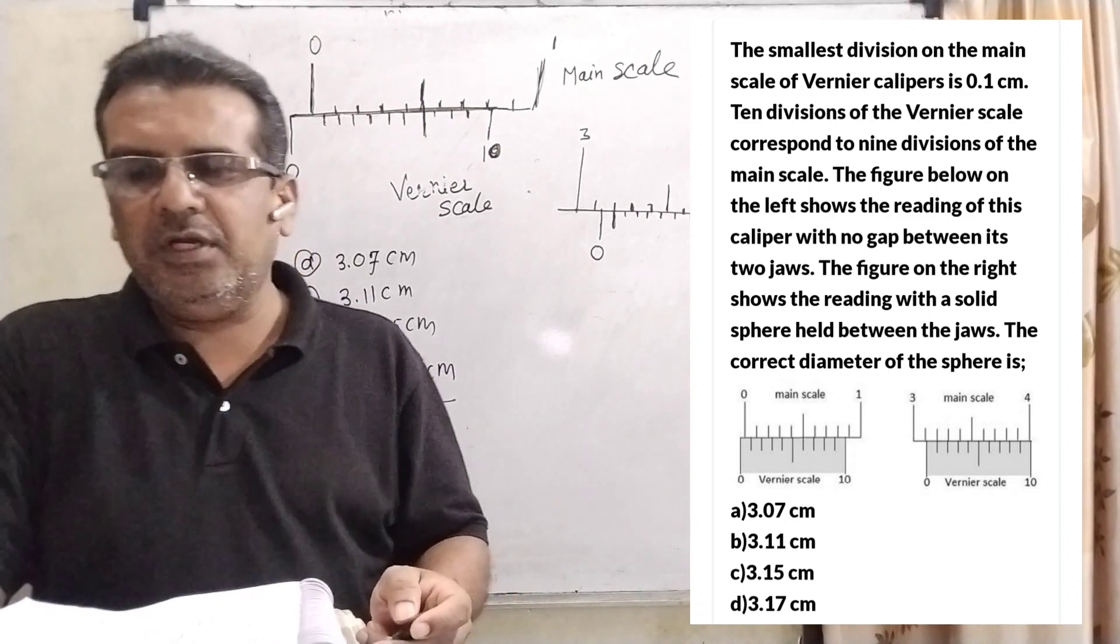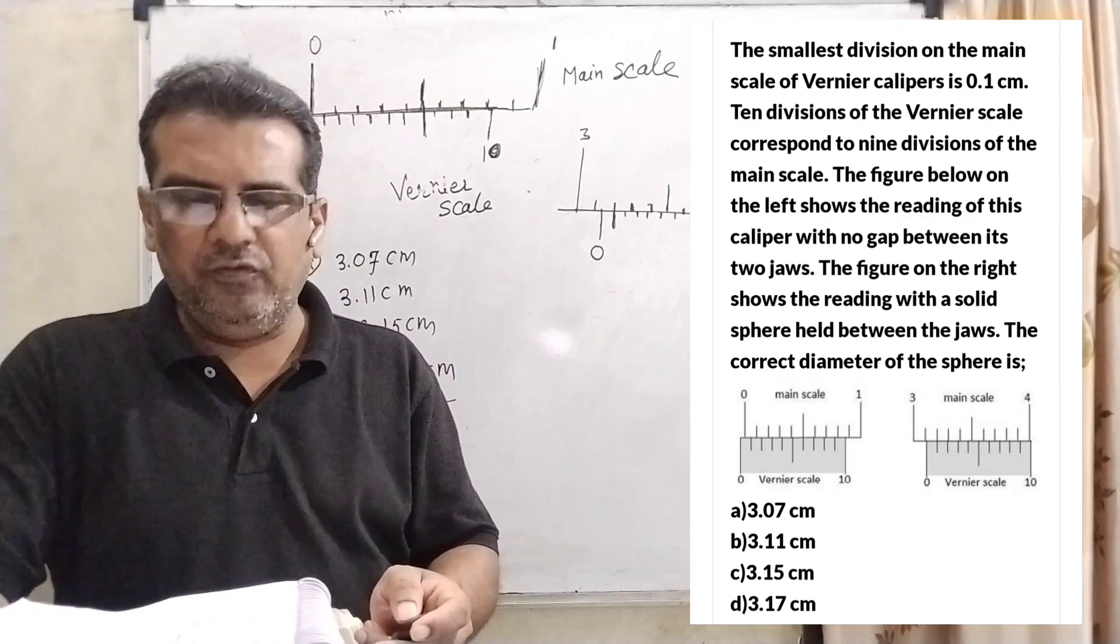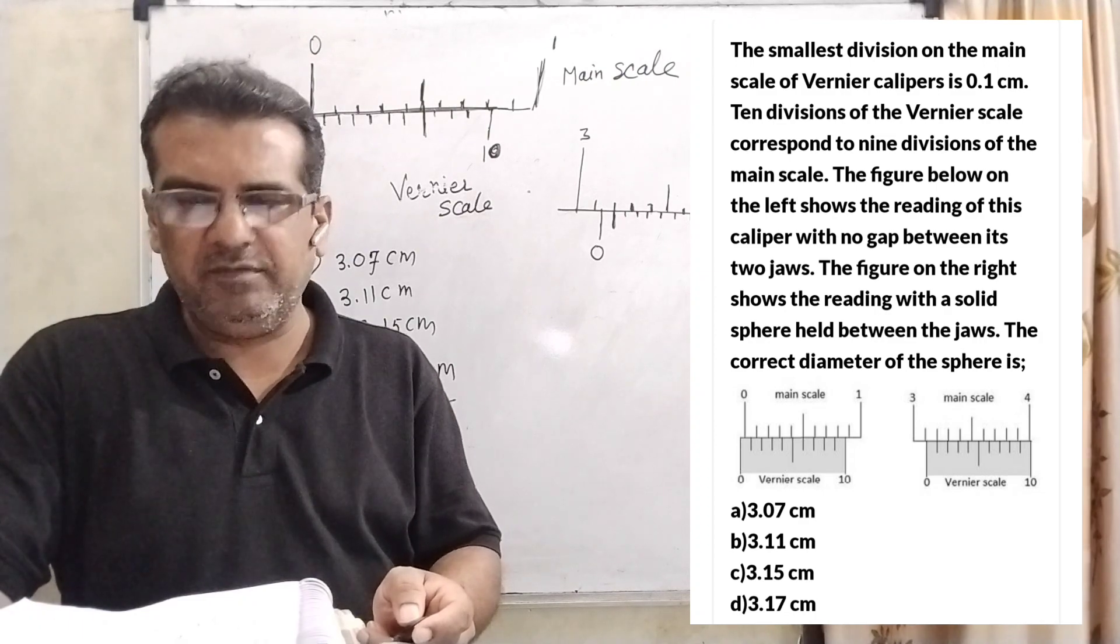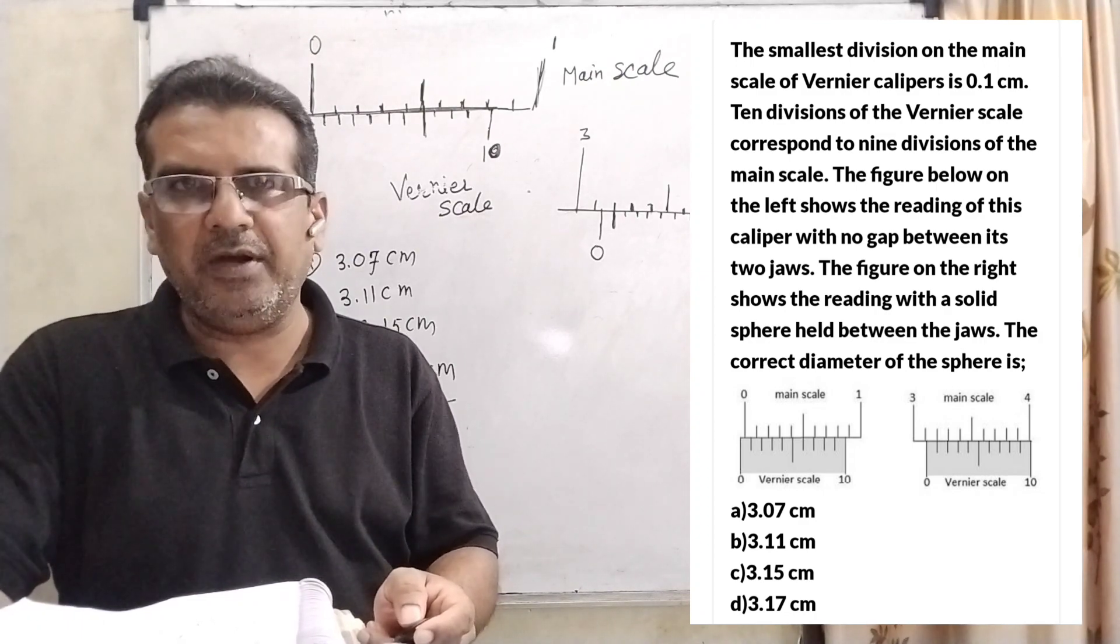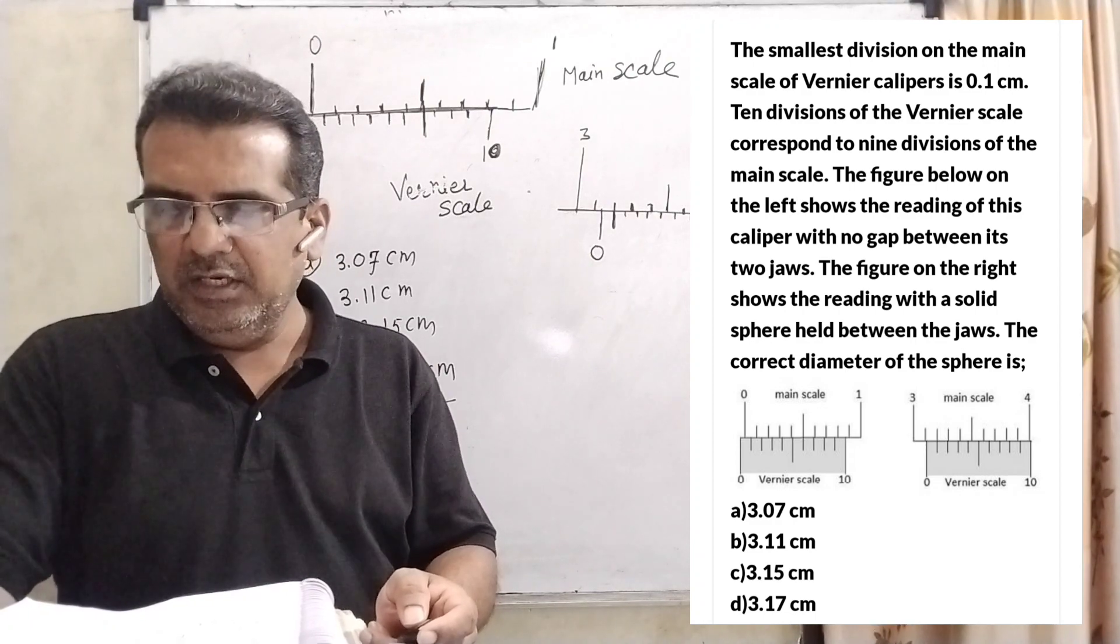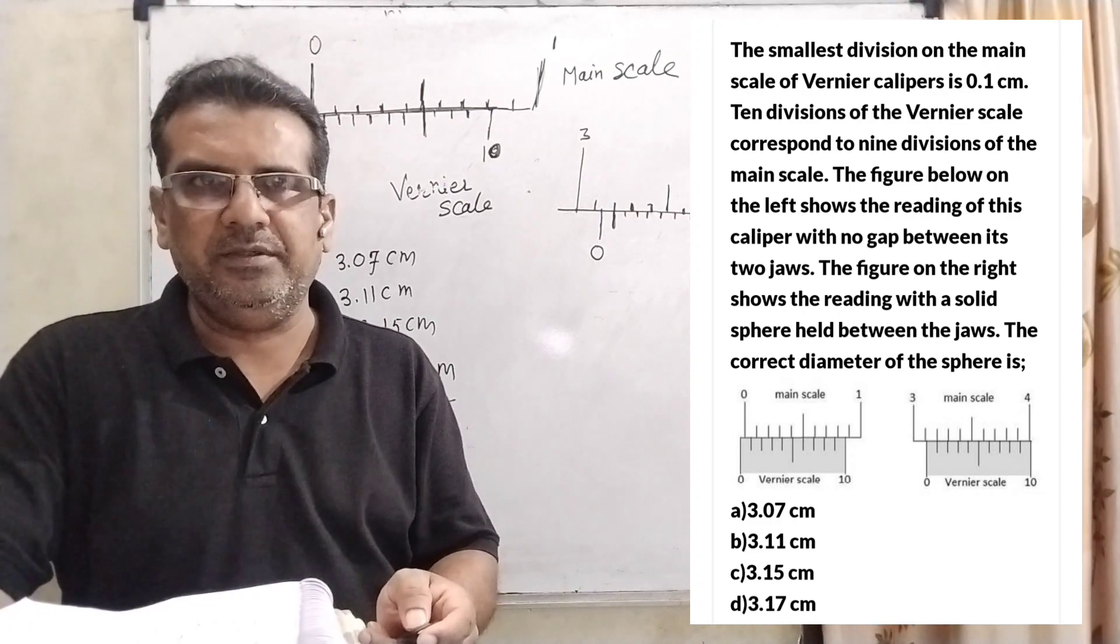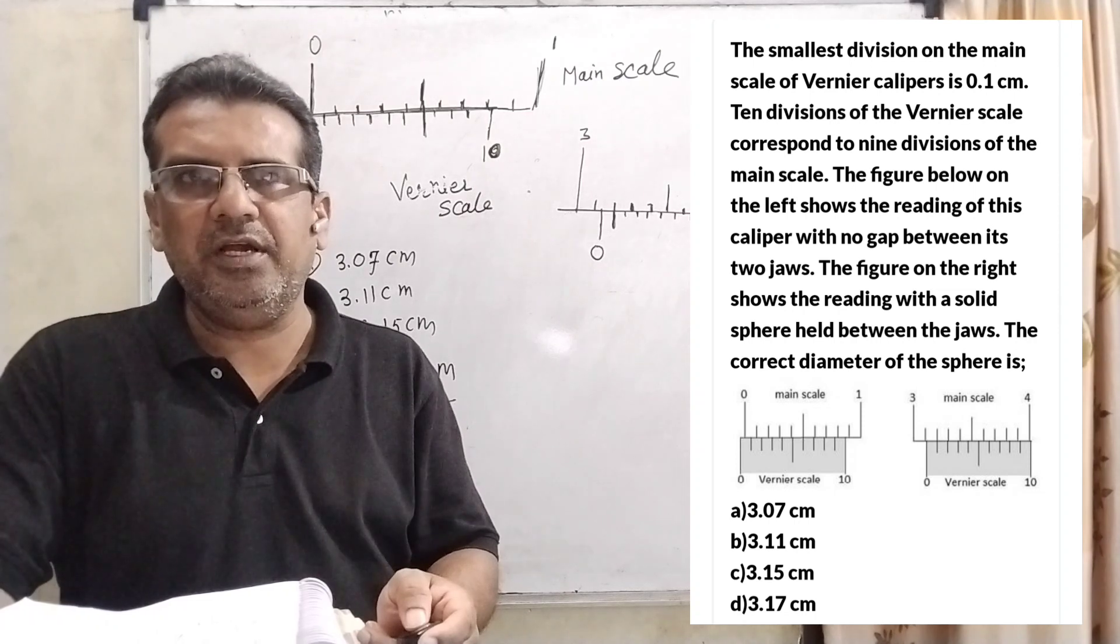The correct diameter of the sphere - here we have given four options. A: 3.07 cm, Option B: 3.11 cm, Option C: 3.15 cm, Option D: 3.17 cm. This question is asked in JEE Advanced 2021.